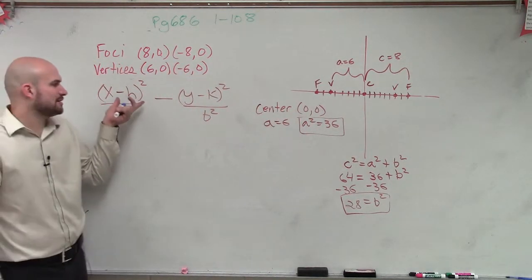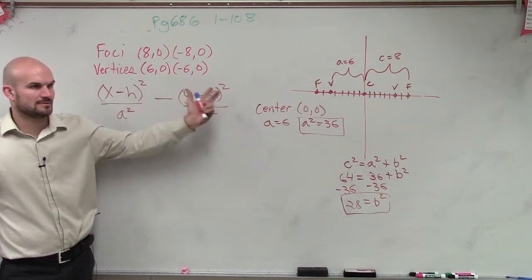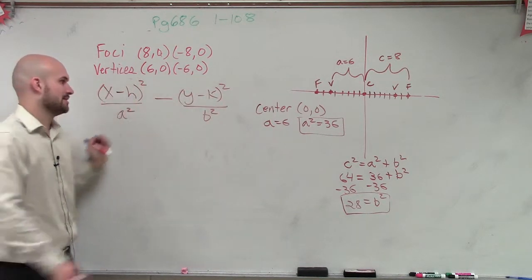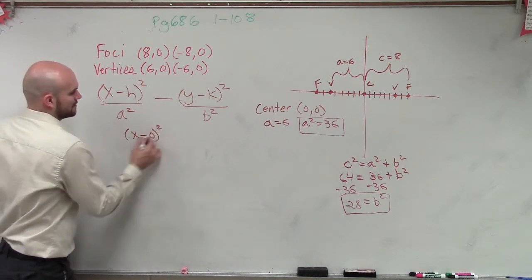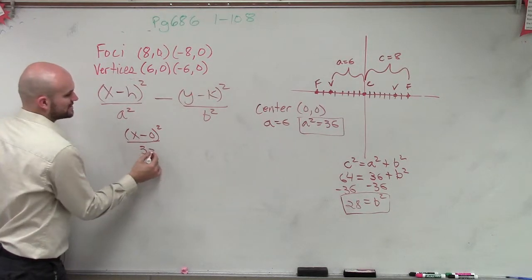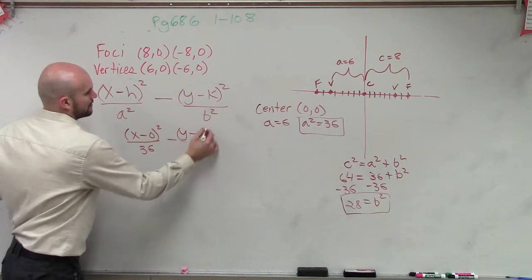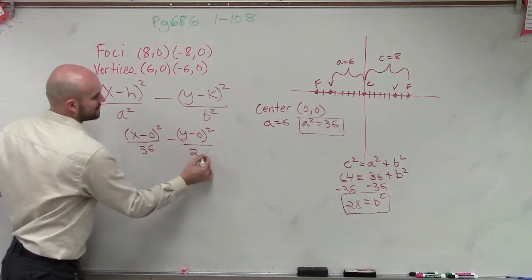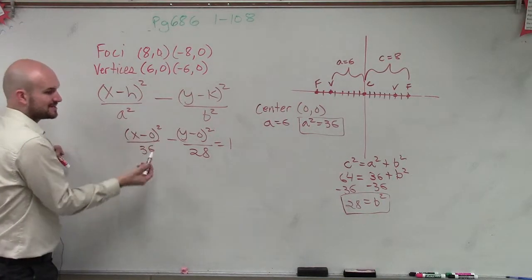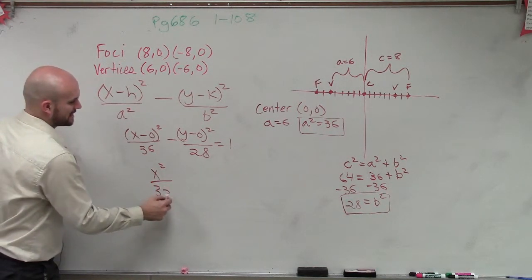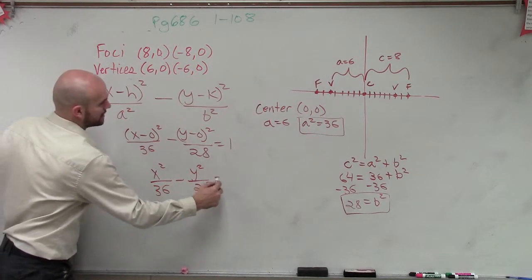So ladies and gentlemen, since h and k are both 0, we can write x minus 0 squared over 36, minus y minus 0 squared over 28, equals 1. Since x minus 0 is just x, this simplifies to x squared over 36, minus y squared over 28, equals 1. And there you go — that's it.